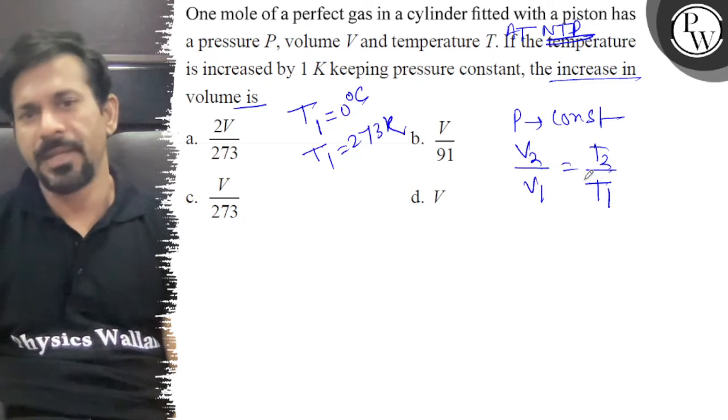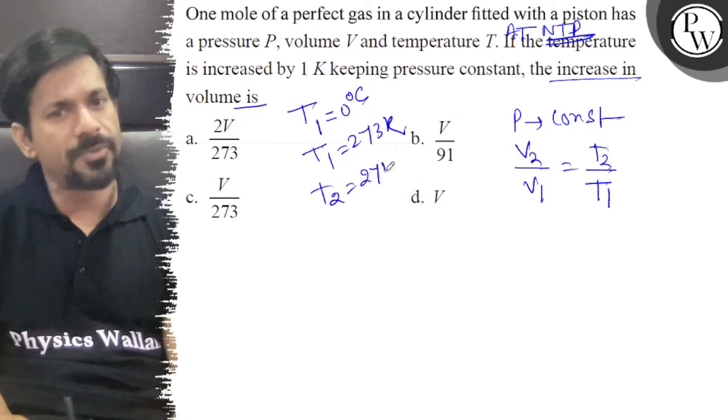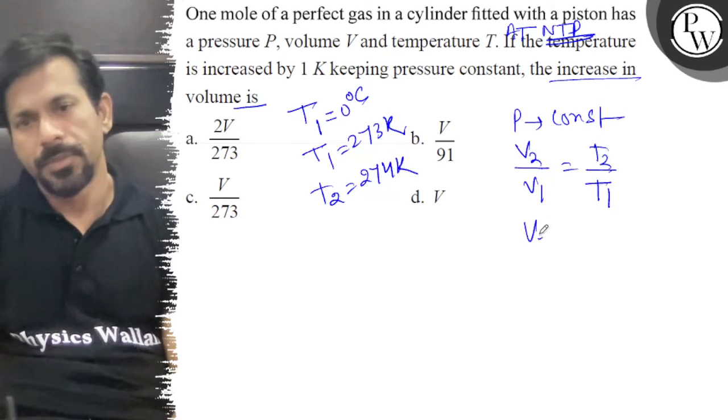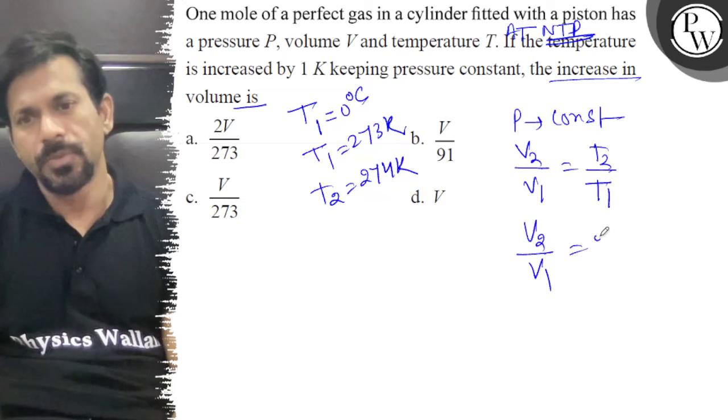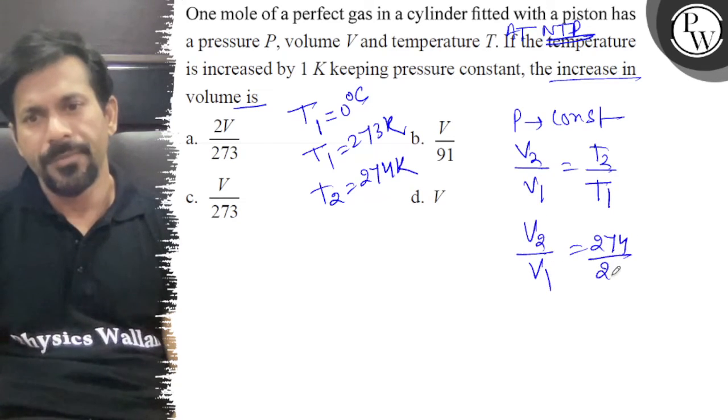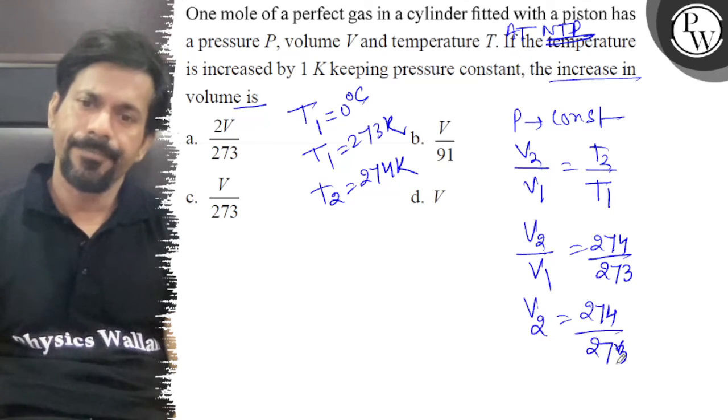Now, we can add 1 Kelvin. T2 equals 274 Kelvin. So V2 upon V1 equals 274 upon 273. Therefore, V2 equals 274 upon 273 times V.